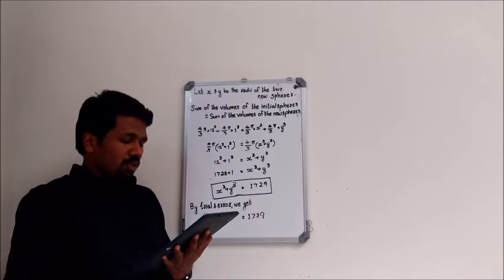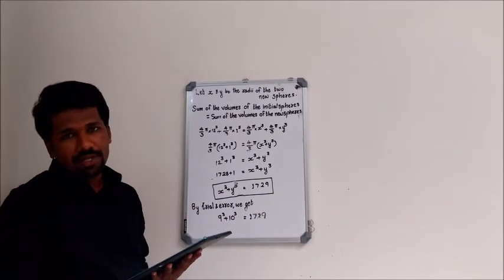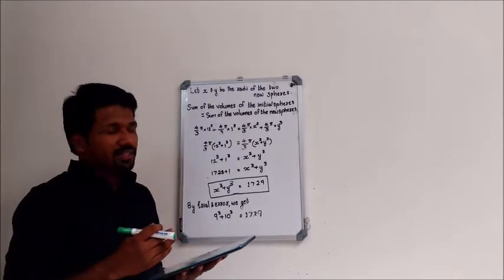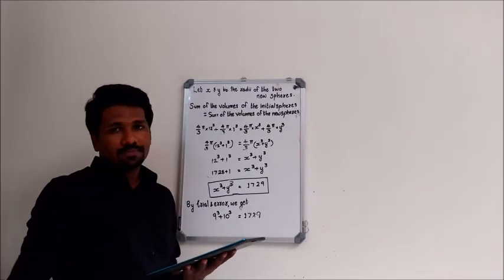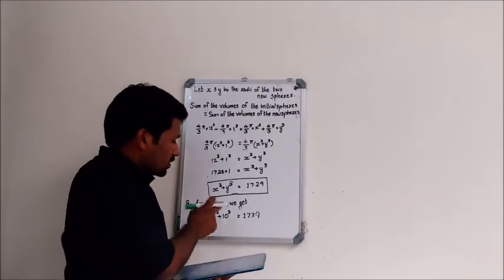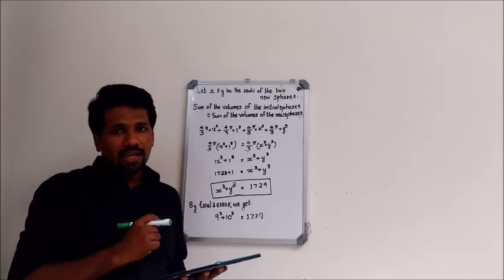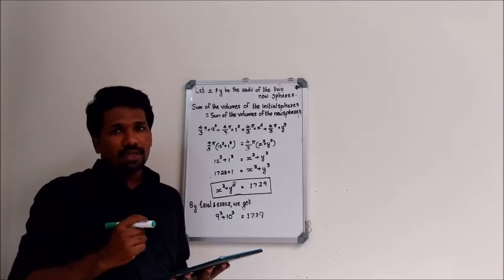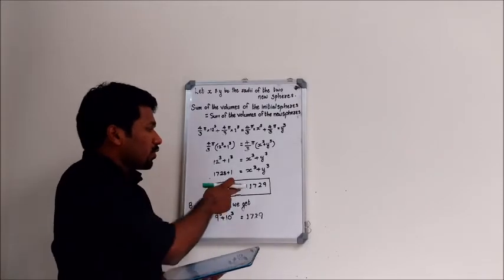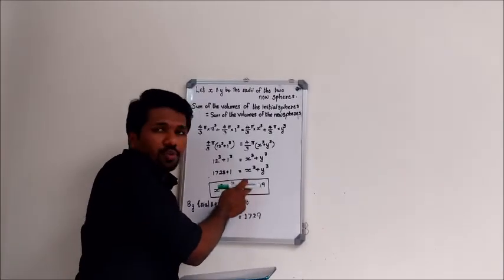Considering option 2, that is 9 cm and 10 cm, let us put 9 and 10 instead of X and Y. That is 9³ + 10³. 9³ is 729 and 10³ is 1000. 729 + 1000 is exactly equal to the right hand side, 1729.